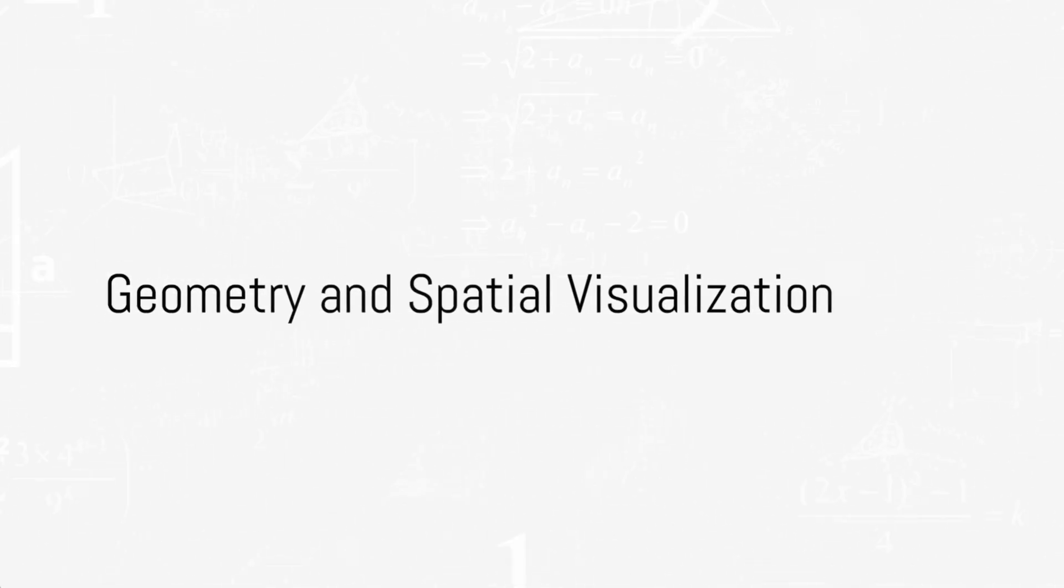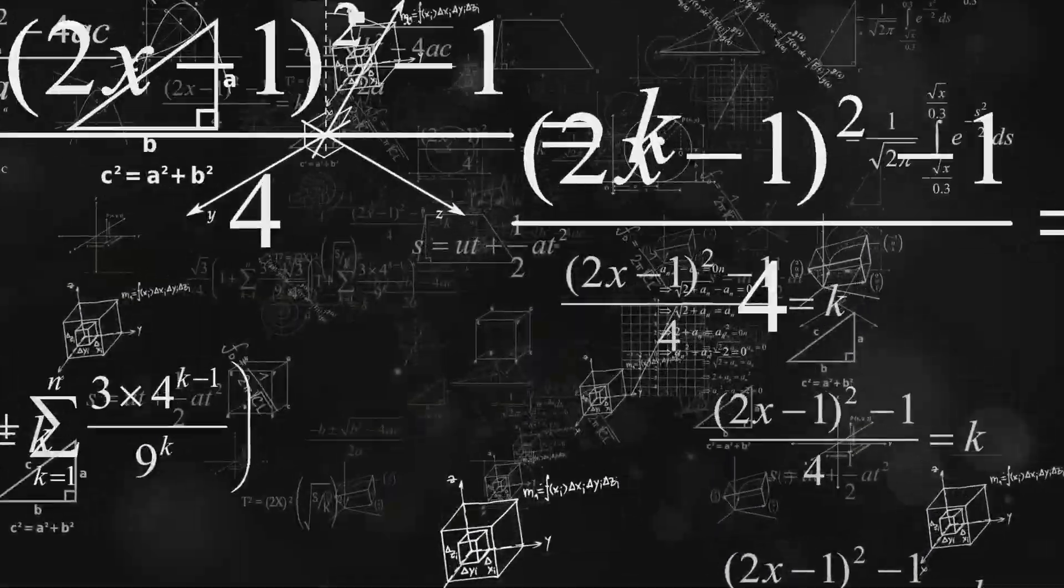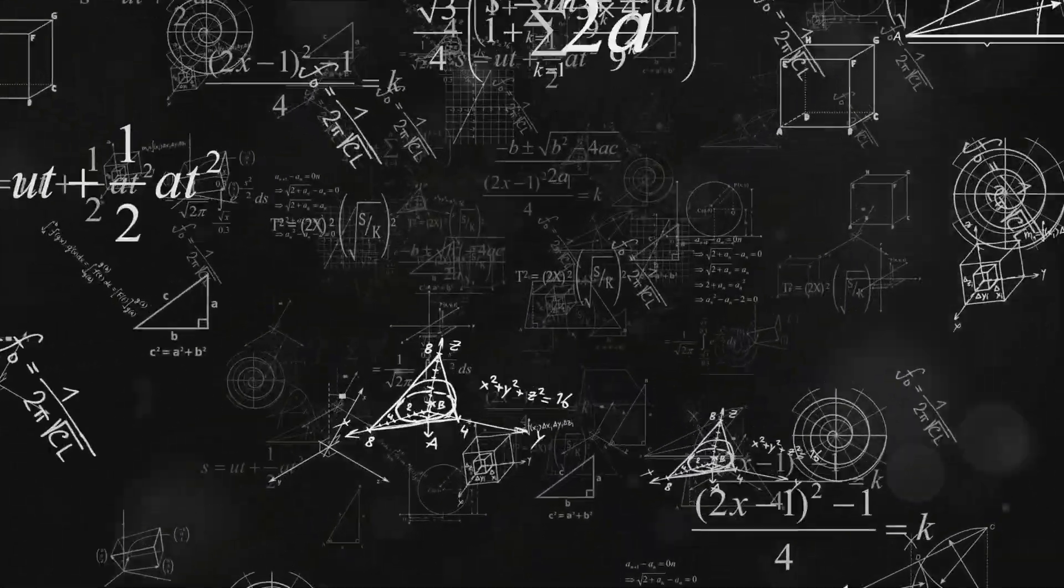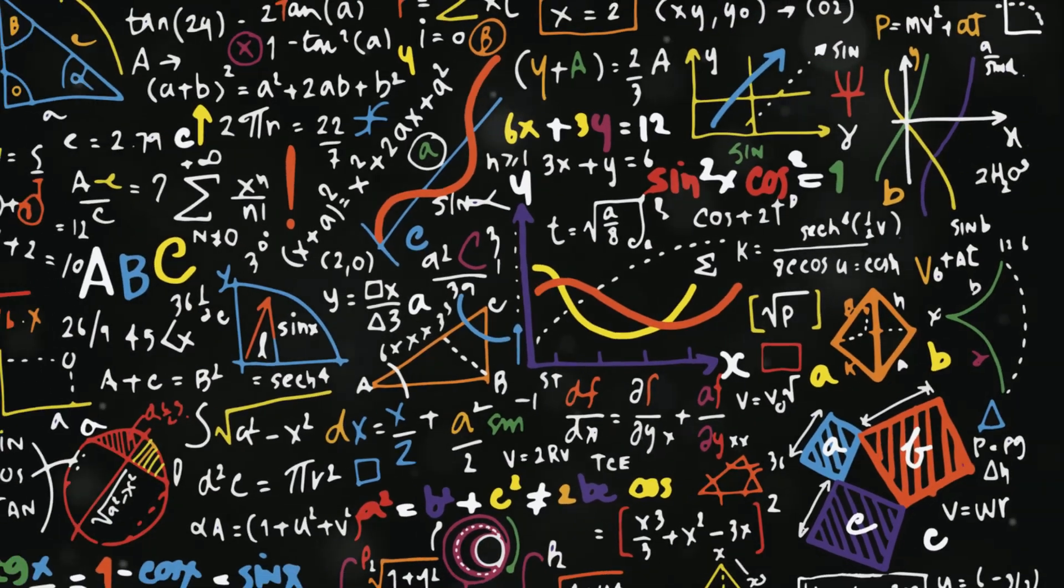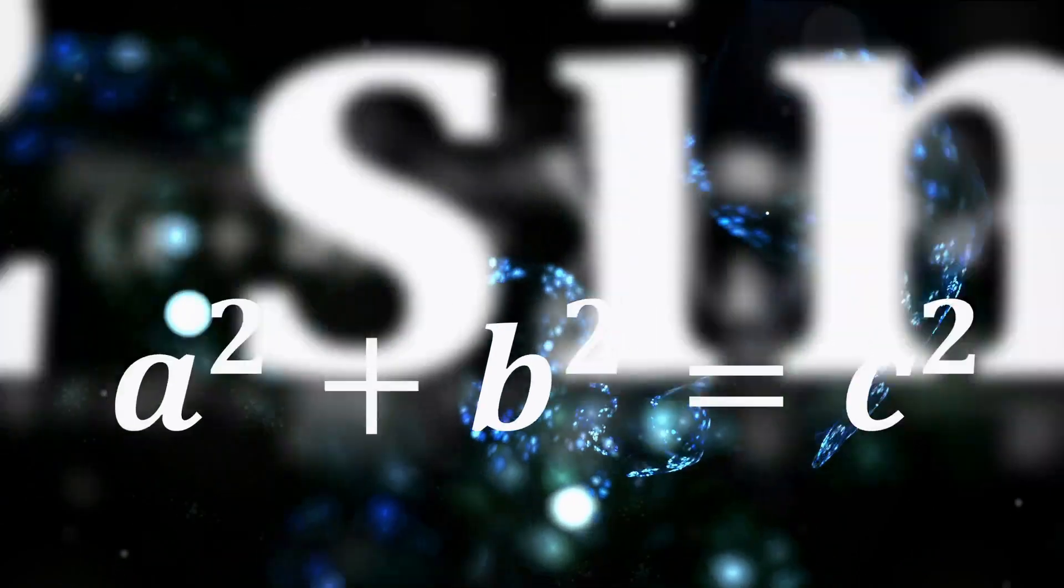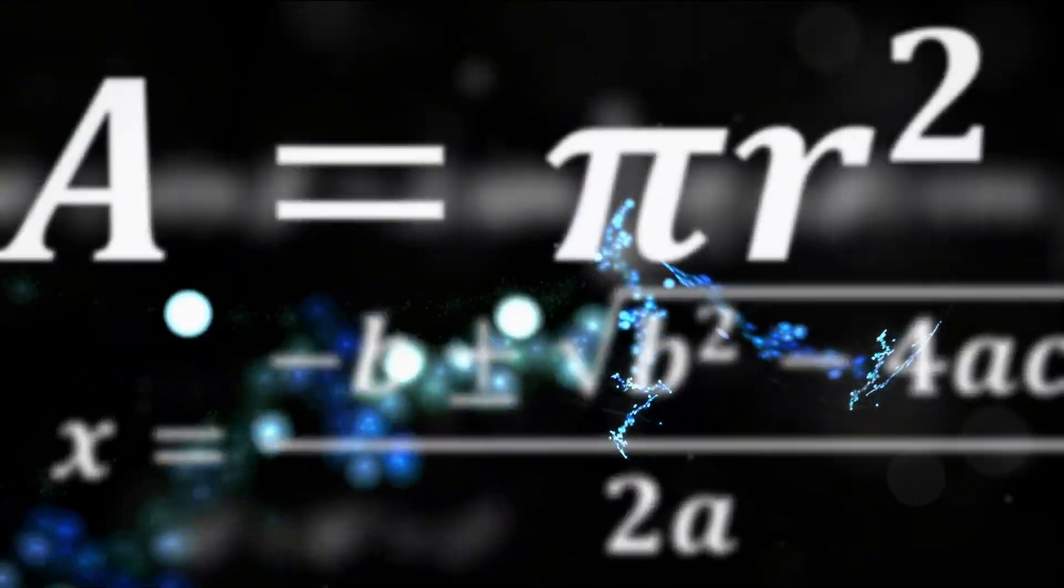Sixth on our list is geometry and spatial visualization. This topic explores the visual and abstract aspects of geometry, including Euclidean, non-Euclidean, and differential geometry, and their applications in architecture, physics, computer graphics, and robotics.